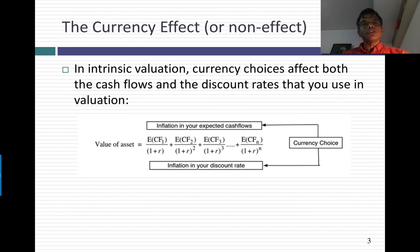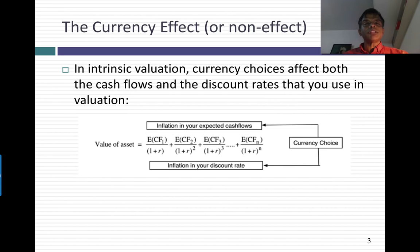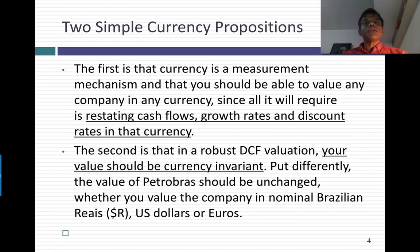Let's say it was 6% and that the US dollar inflation rate was 2%. If you decide to do your valuation in Brazilian real, when you estimate the expected cash flows for your company, you will get an assist from that 6% inflation rate. It doesn't mean that your company will have to grow at 6%, but that 6% inflation rate will augment whatever real growth your company has. And then when you do your discount rate, that same 6% will make an entry to your discount rate as an additional component. If I switch to US dollars, both the numerator and the denominator should reflect a 2% inflation rate. Currencies matter in valuation, but they matter everywhere — not just in your discount rate, not just in your cash flows, but in your cash flows, your growth rates and your discount rates.